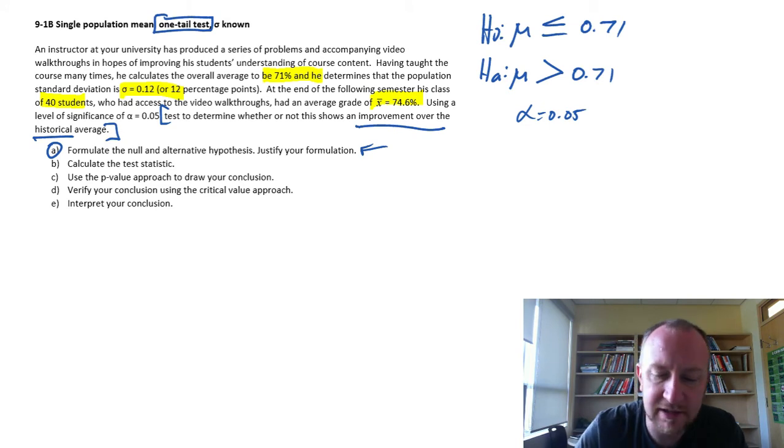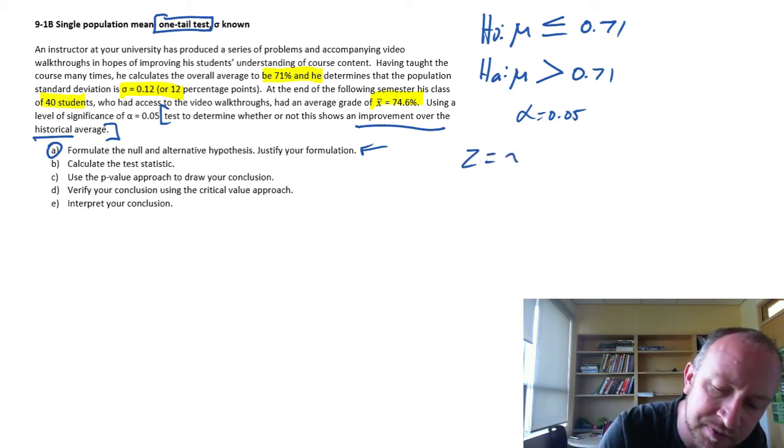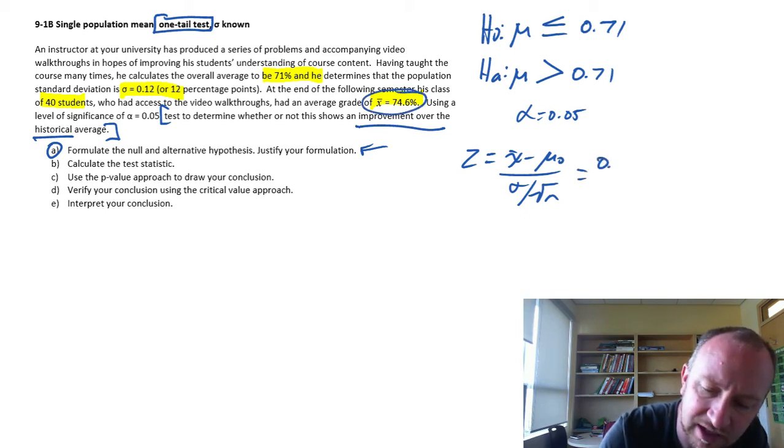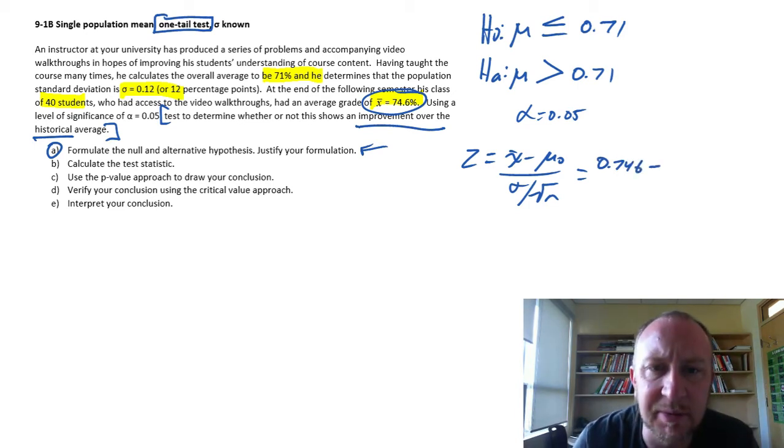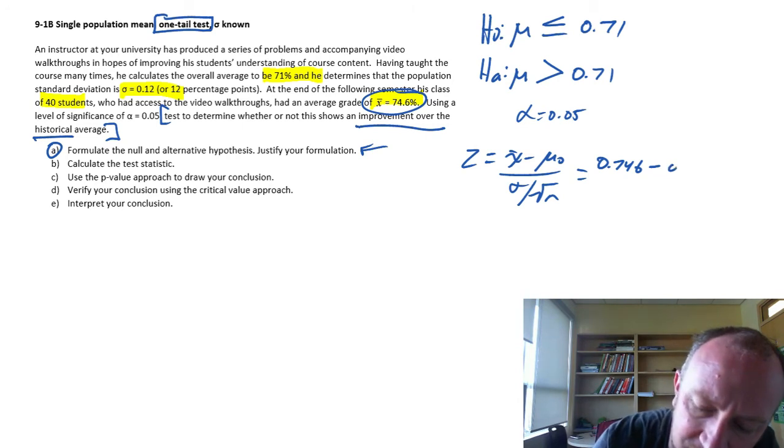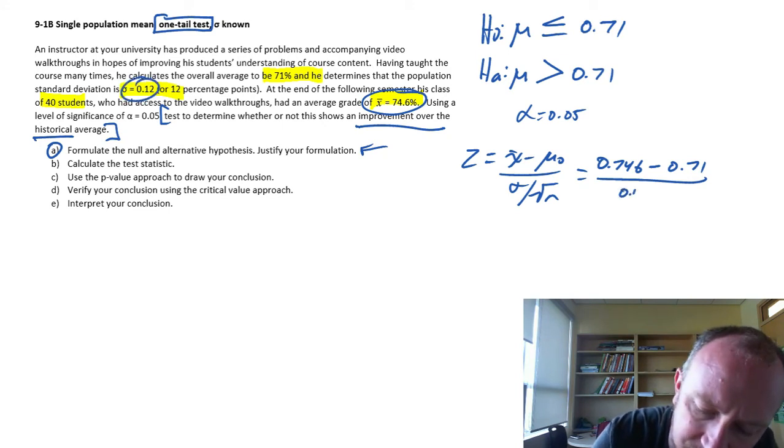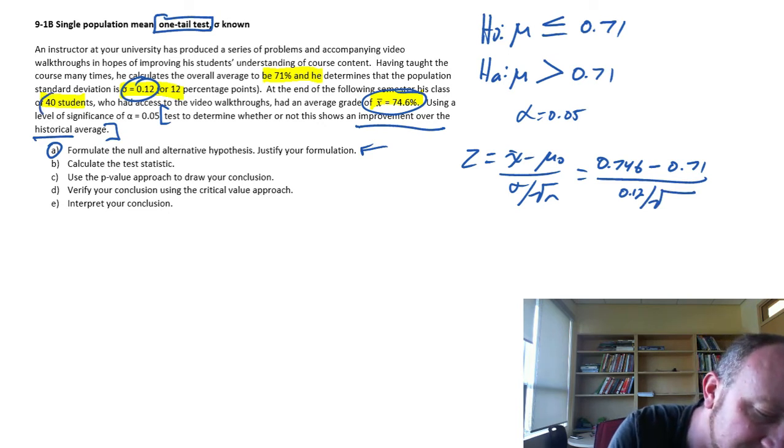Calculate our test statistic. We're doing a z test so we need this formula. We have all the bits of information. Here's my sample mean. I always like to keep things in decimal format rather than as a percentage. So 0.746 minus 0.71.